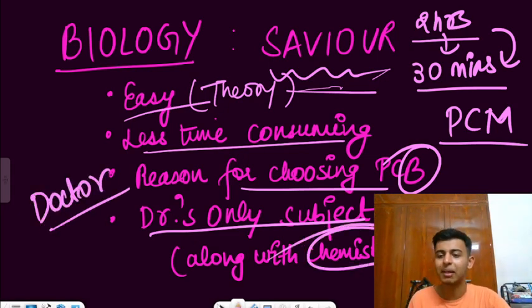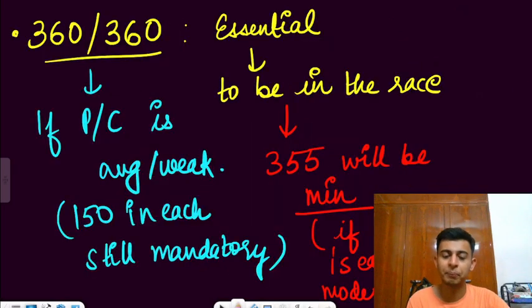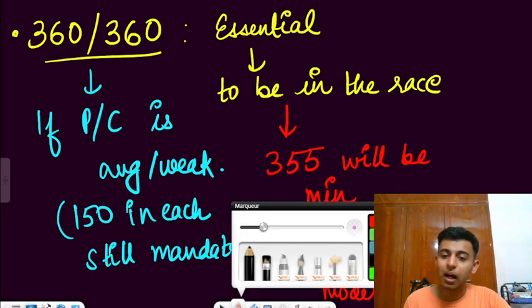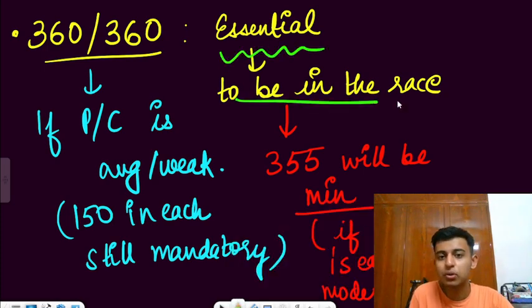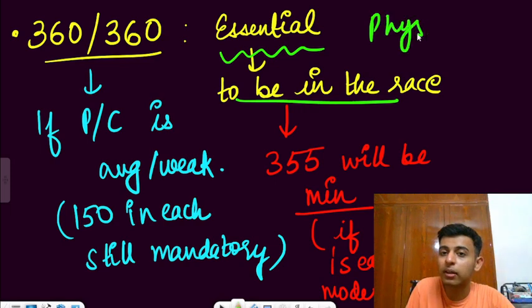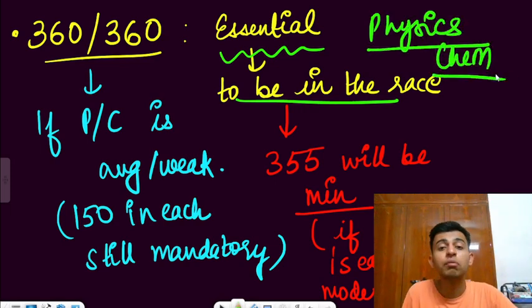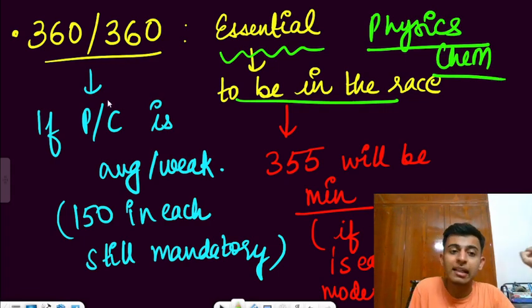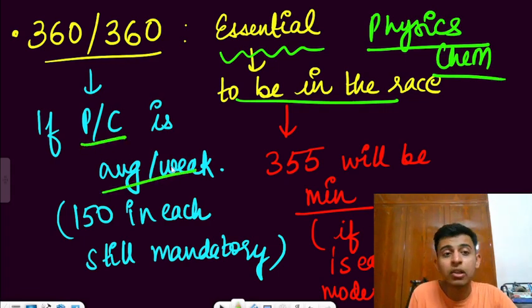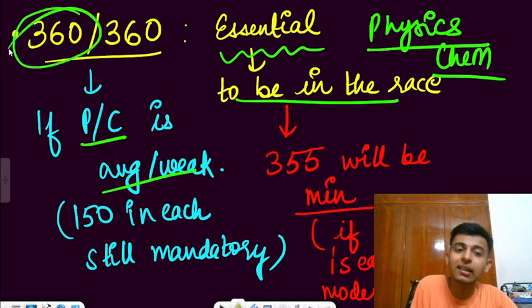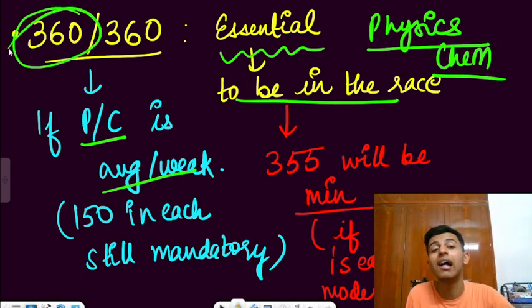Now 360 out of 360 becomes very essential to stay in the race. In the race means most of the students do not have the command over physics as well as chemistry. So if you want that to happen, you will have to ensure marks in biology. See, if your physics or chemistry is average or weak, then please target 360 in bio. Please read NCERT again and again.